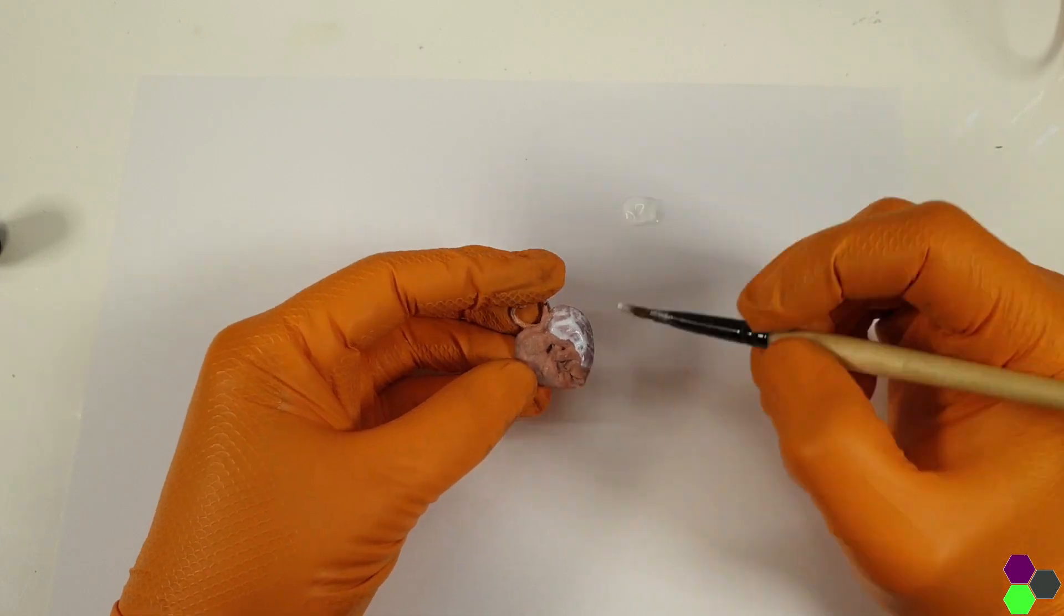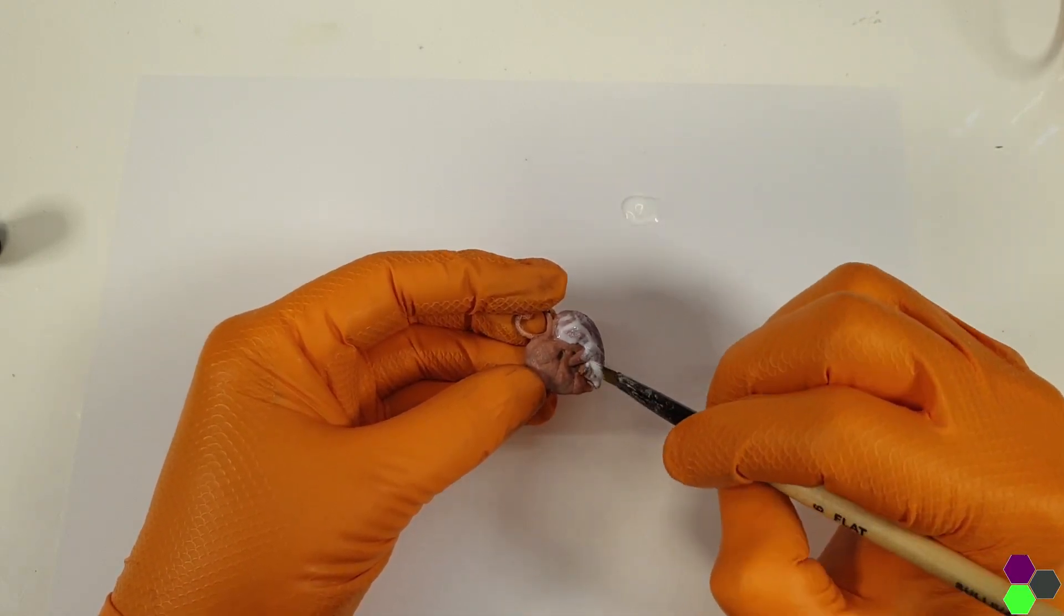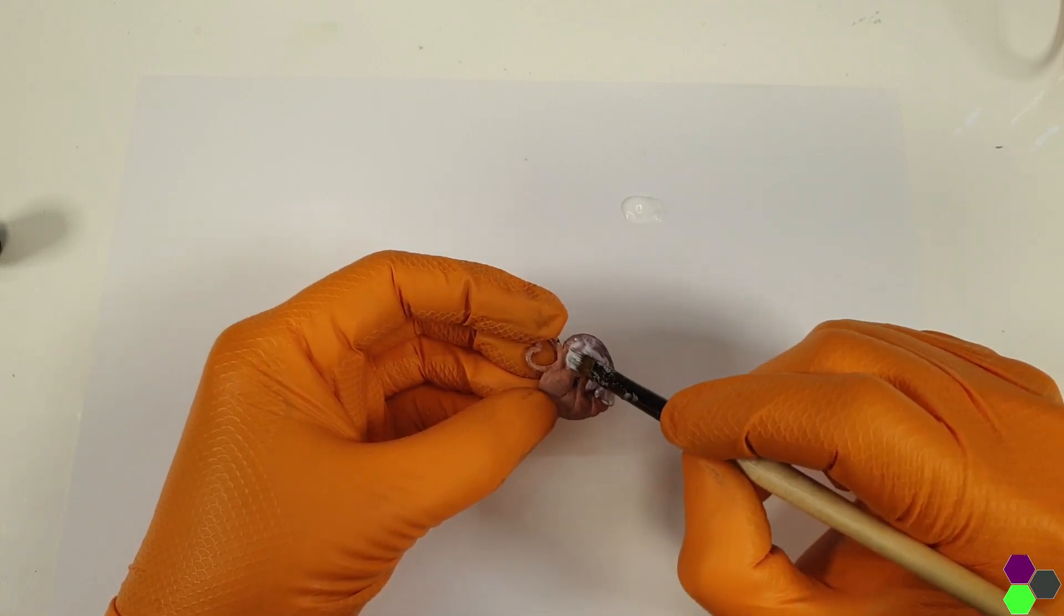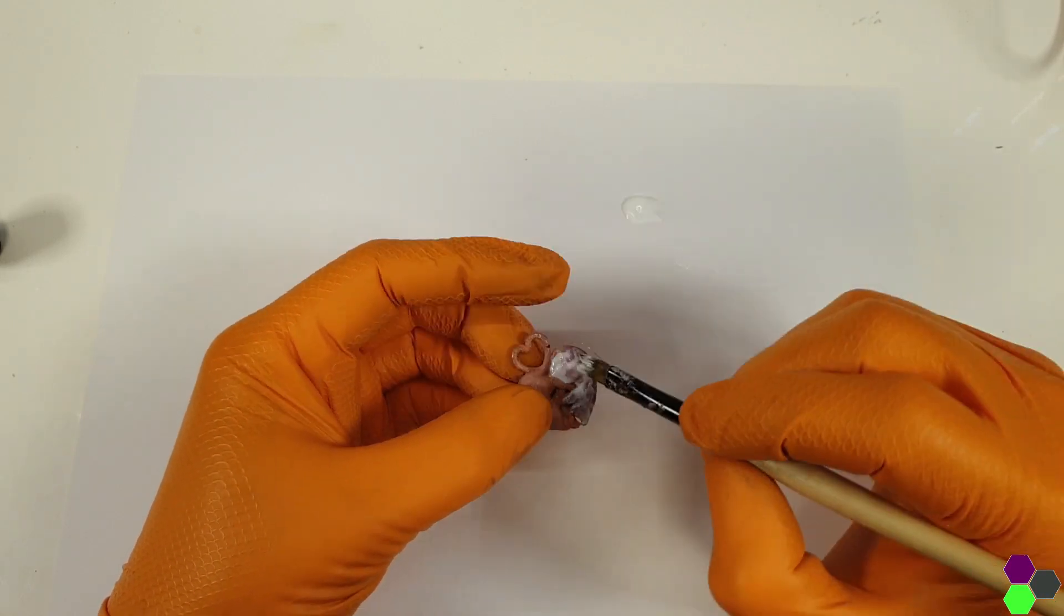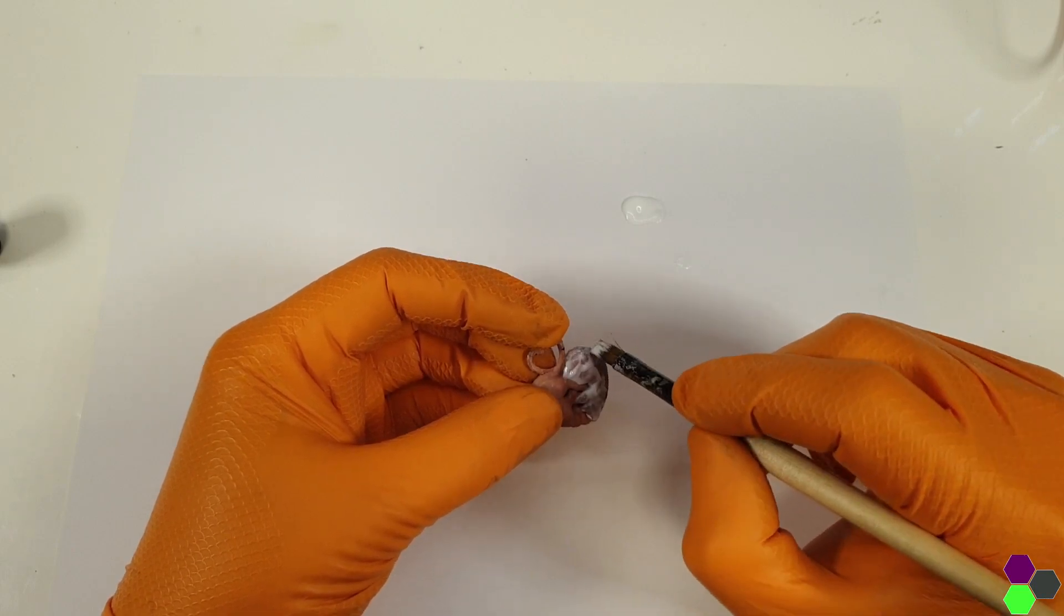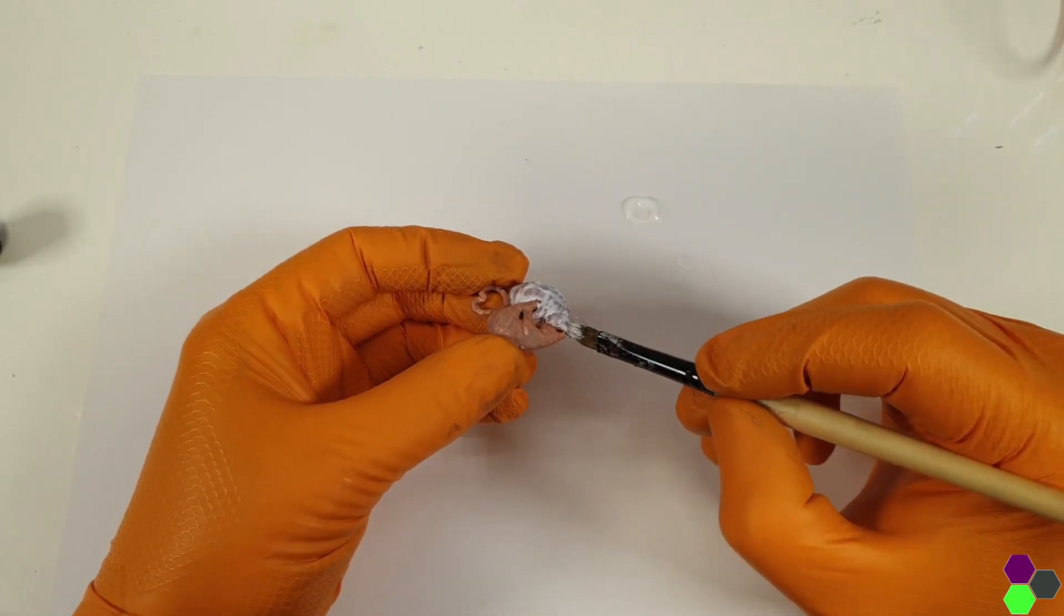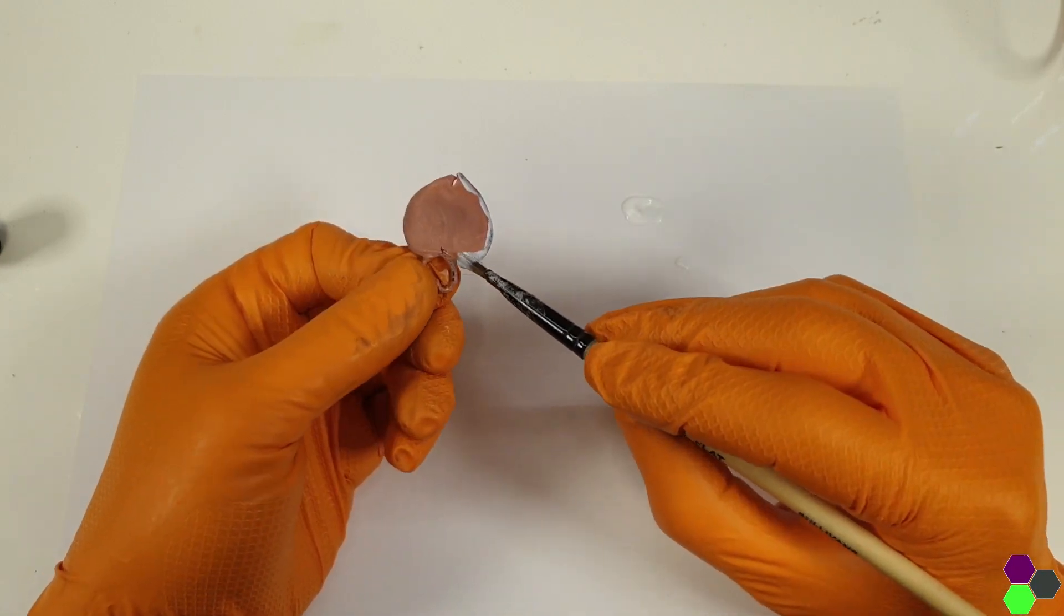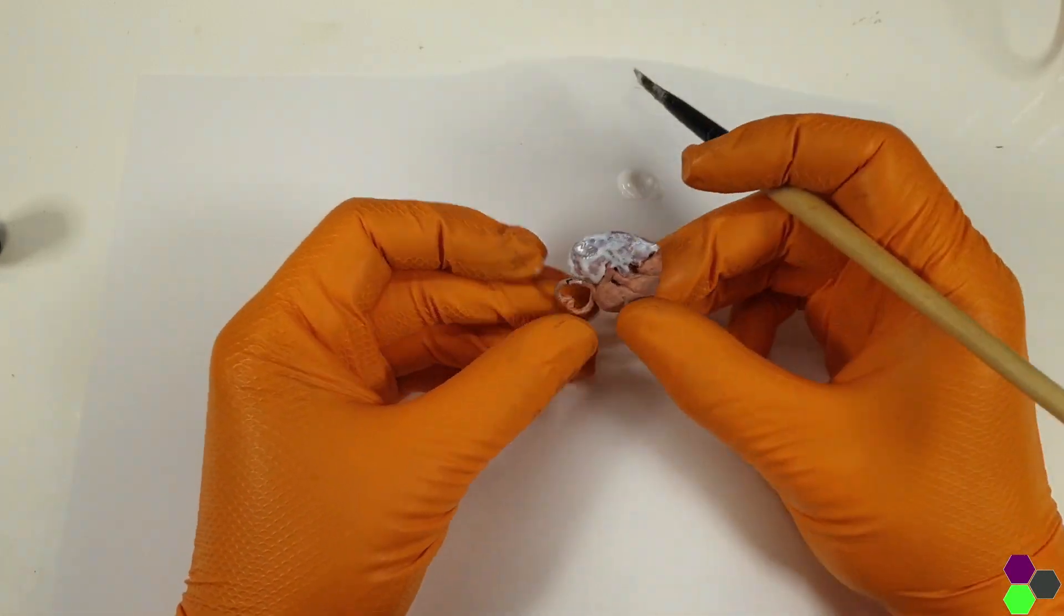Another way that we can selectively plate items is by masking. I like to use liquid latex or petroleum jelly to coat areas that I do not want to plate. On this pendant, which I fully copper plated, I'm going to mask off one of the cats with liquid latex. It will allow me to nickel plate the remaining half and have a dual plated object.